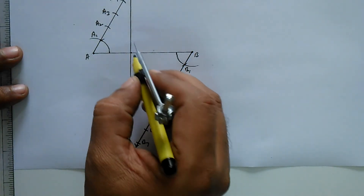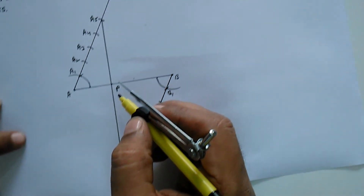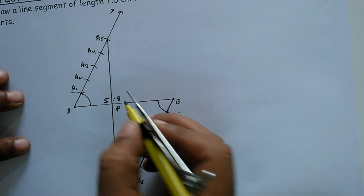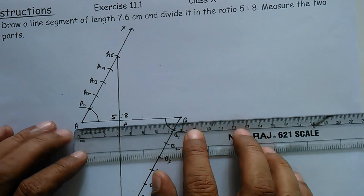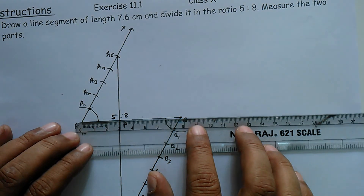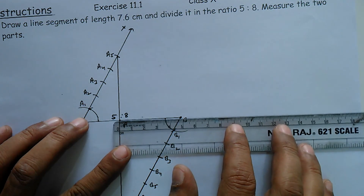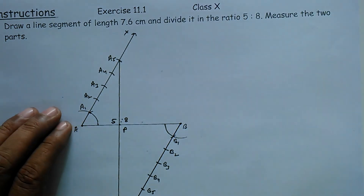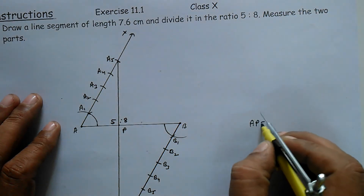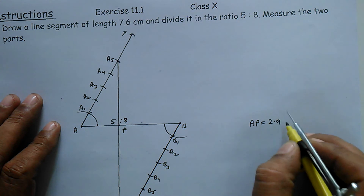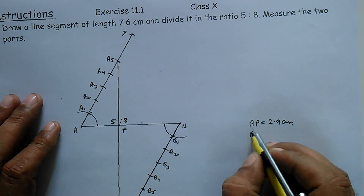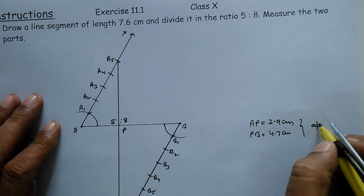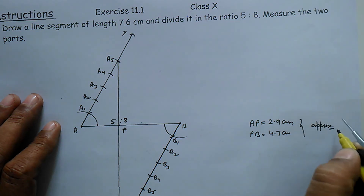Here this is a point T. The point T divides the line segment AB in the ratio 5:8. So the measurement of the first part AT is approximately 2.9 cm, and the measurement of the second part PB is equal to 4.7 cm. Both are approximate.